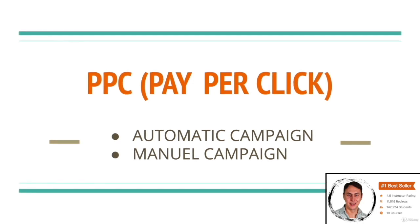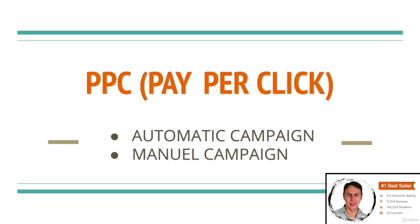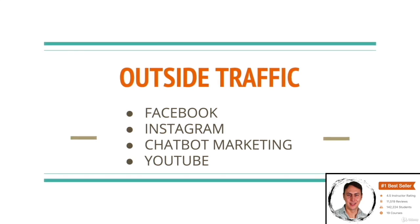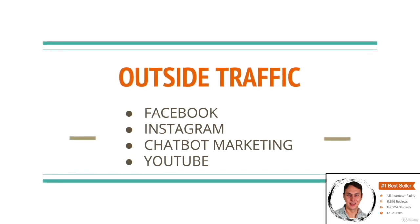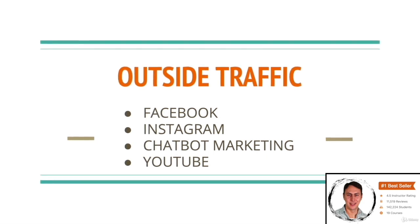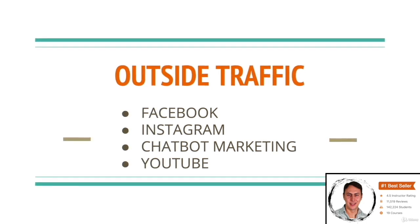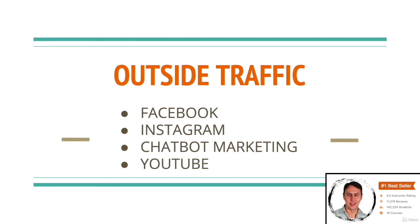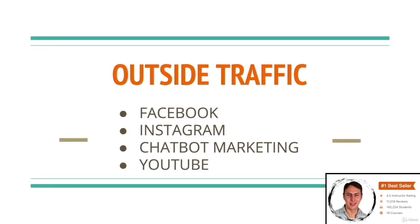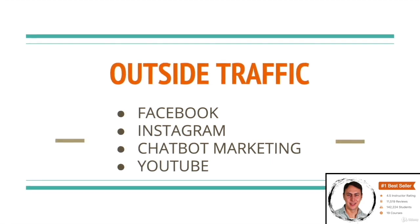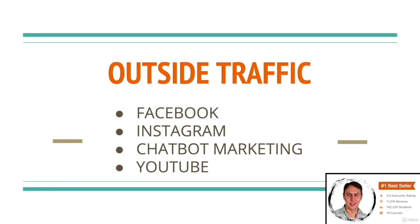Another method of increasing sales is to attract traffic from outside Amazon. Amazon loves external traffic — when you bring customers to Amazon, it will rank you much faster. You can use channels like Facebook, Instagram, chatbot marketing, and YouTube. However, these strategies depend on your skills. The more experience you have with these platforms, the more effectively you can use them to attract external traffic and develop good sales strategies.